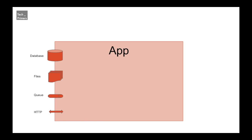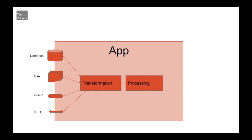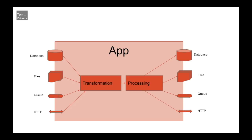After we consume messages from these flows, we transform them and process them. Once processed, we need to push them back into a flow — either to a database, creating files, pushing to another queue, or publishing messages via REST or HTTP endpoints. This is what a small microservice or application does, and even a monolith does the same.